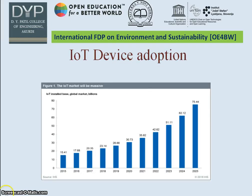Now, why is IoT chosen as a topic for this video? Through the graph, you can see the IoT device adoption rate projected by 2025. It may drastically increase from 15.41% in 2015 up to 75.44% of the market in 2025. That is why IoT is a very recent and most important area of research being carried out these days.